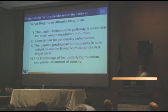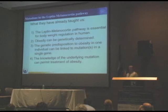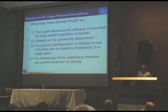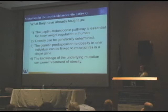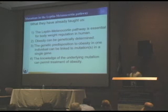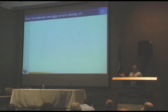These mutations have told us that the leptin-melanocortin pathway is essential for body weight regulation in humans, and that obesity can be genetically determined. The genetic predisposition to obesity in one individual can be linked to a single gene mutation, and knowledge of the underlying mutation can permit treatment. There are essentially two treatments that can actually cure severe obesity: bariatric surgery and leptin — which can treat severe obesity specifically in those patients with mutations in the leptin gene.